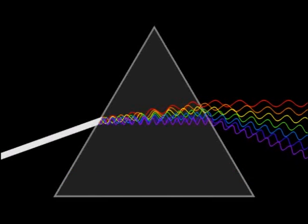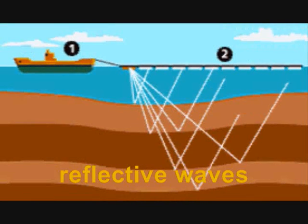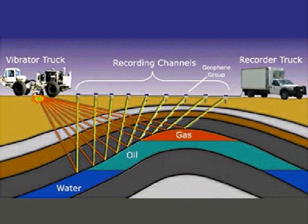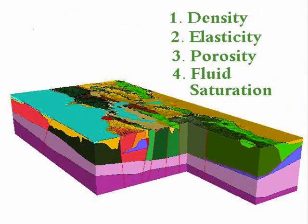When we create waves, we create refractive waves that continue on and reflective waves that, after hitting a boundary, bounce back. Both of these types of waves are used to help determine the properties of rock like density, elasticity, porosity, and saturation.